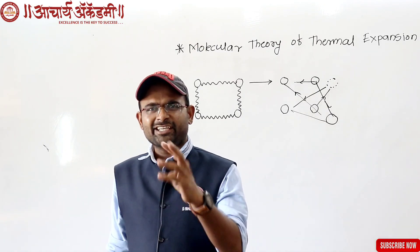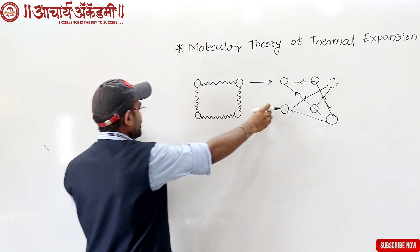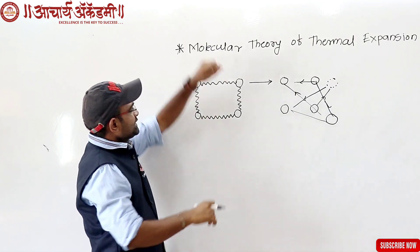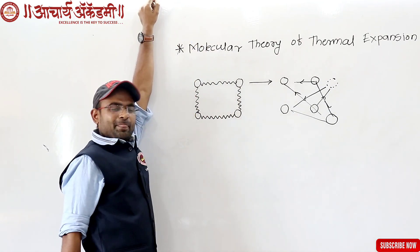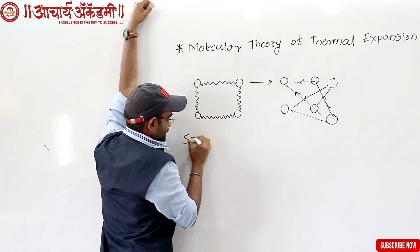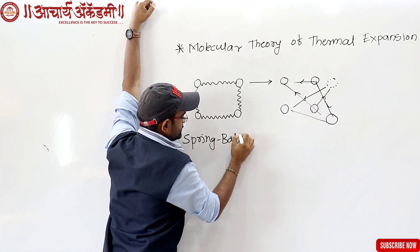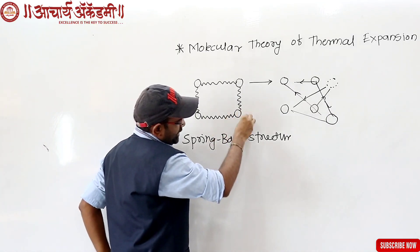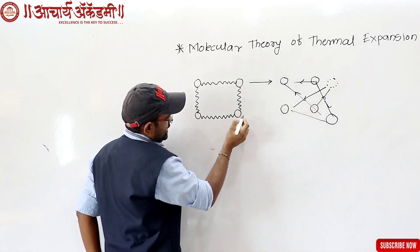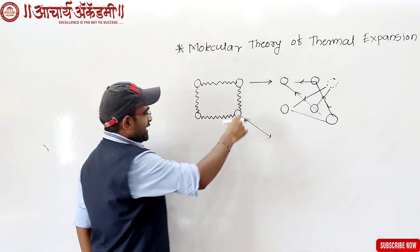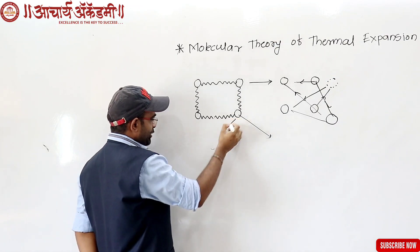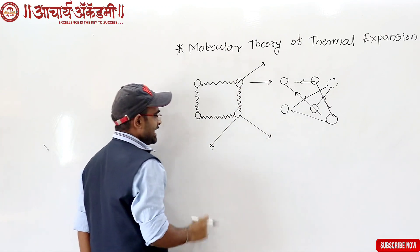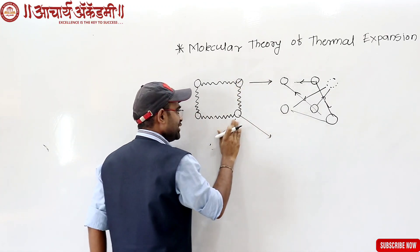A daily life example: consider four balls connected by springs. What is the spring structure? The ball-and-spring structure represents the molecular structure. If by any chance I stretch this spring, you can say that structure is similar to the molecular arrangement.